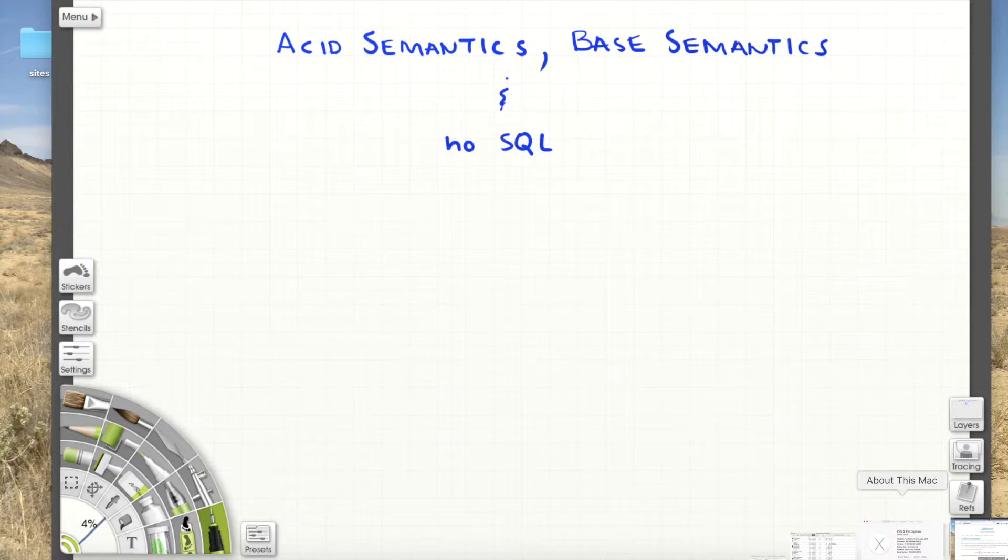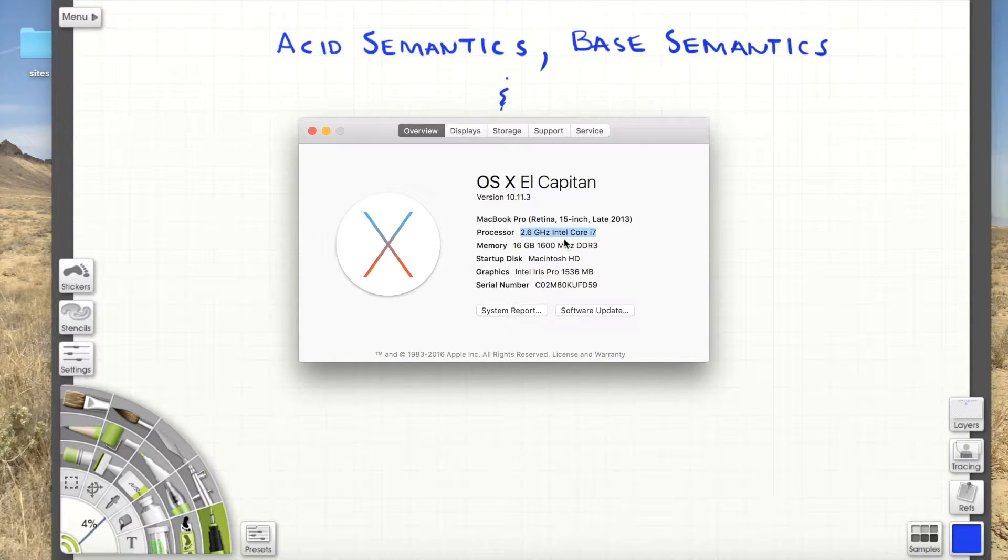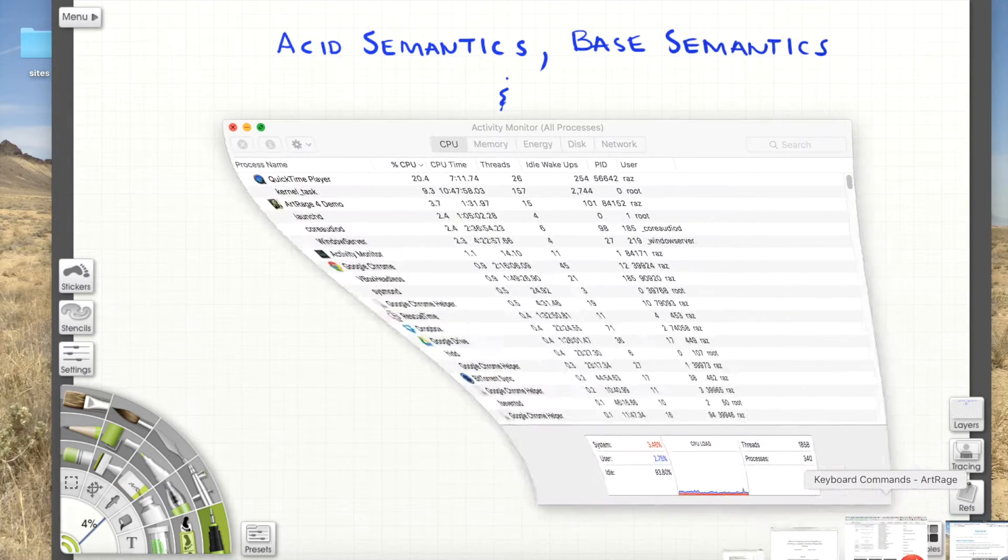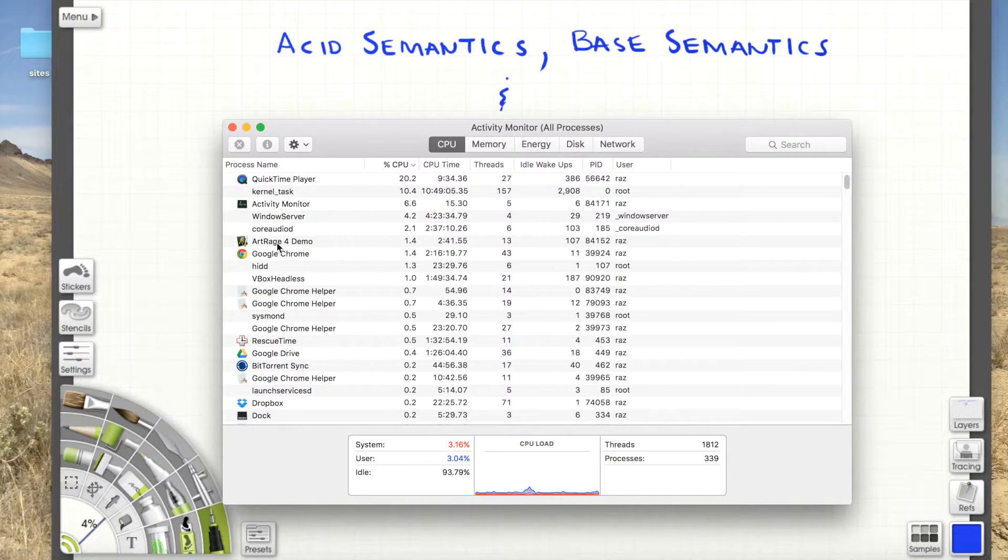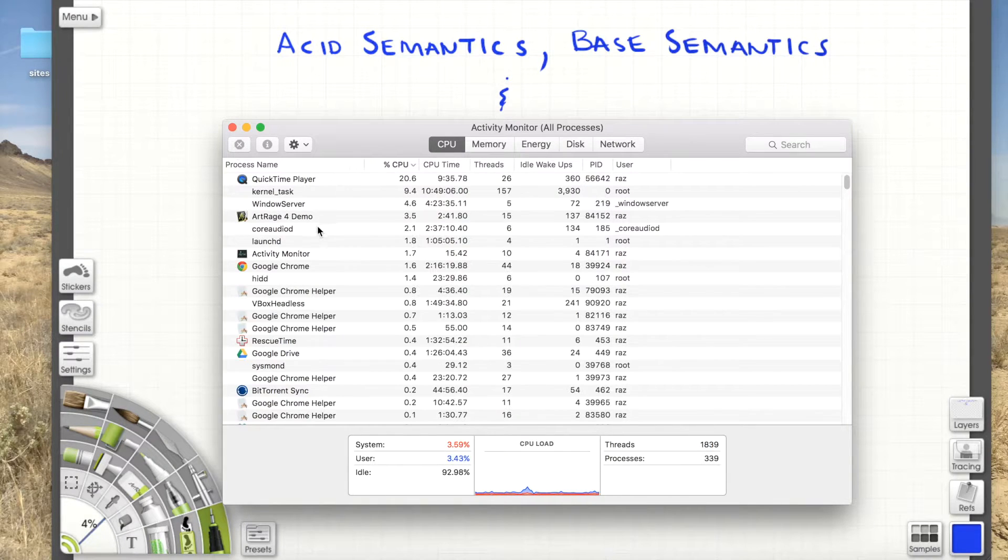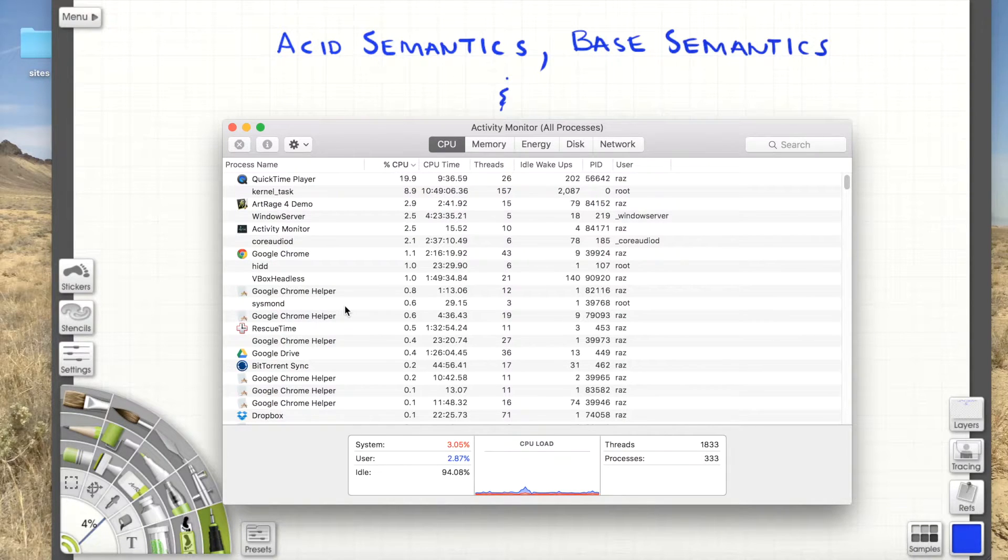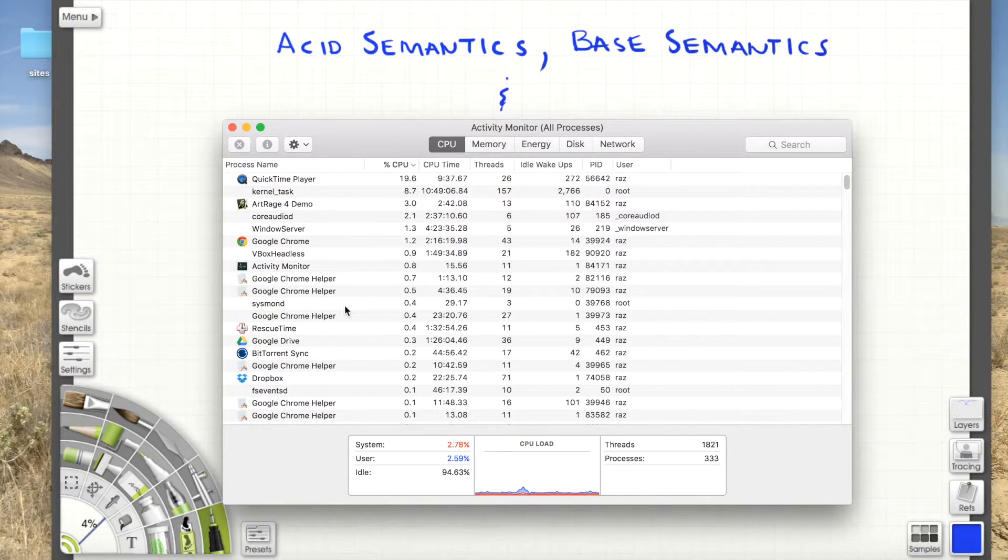So I have a four core machine here, a few generation old 2.6 gigahertz Intel Core i7. And I have an overabundance of things running, like 2000 threads. I have this video QuickTime player recording, this ArtRage demo program for writing on screen, Chrome running, a virtual machine running. So lots of stuff constantly getting interrupted on the processor, some other thing running, and then put back on the processor.